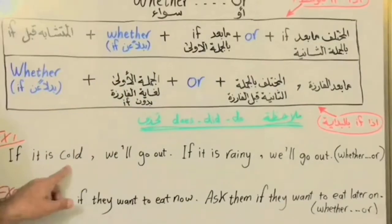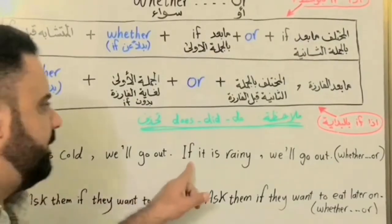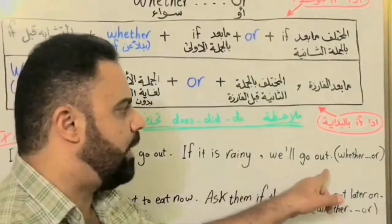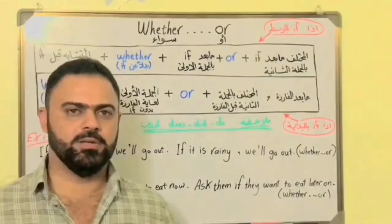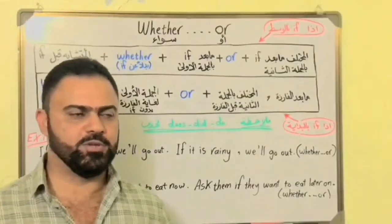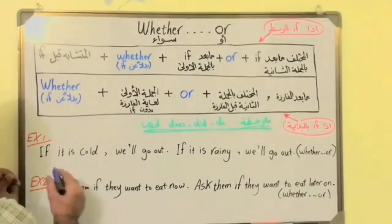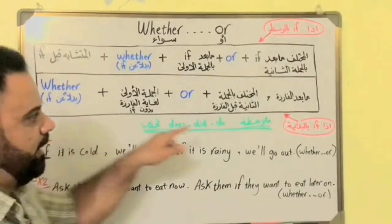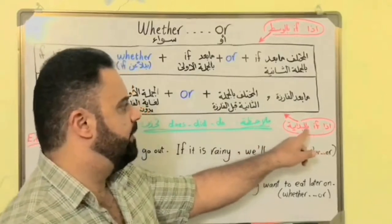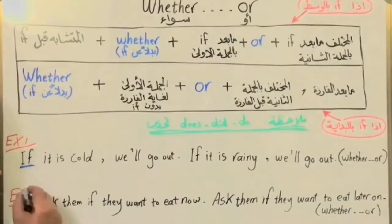If it is cold, we will go out. If it is rainy, we will go out. Whether or. The first thing we do is see where 'if' is — notice that 'if' is in the middle of the sentence. So I'm going to use the first rule, which means I'll use whether or.